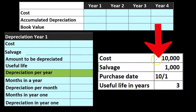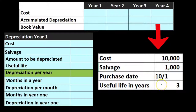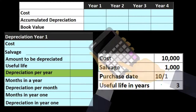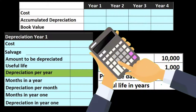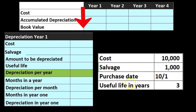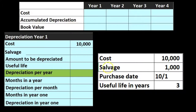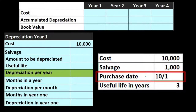We've got the cost here, with the salvage value being $1,000. We purchased it on 10-1, October 1st, and the useful life is three years. So if we go through our normal straight line calculation, the cost is $10,000. We're going to start by getting the depreciation per year, and not try to figure out the fraction of the first year just yet.